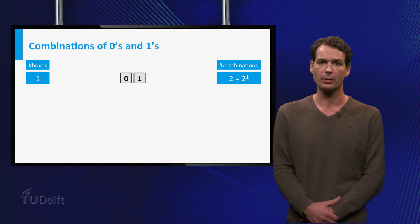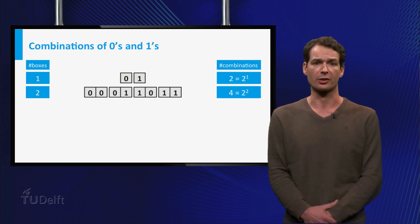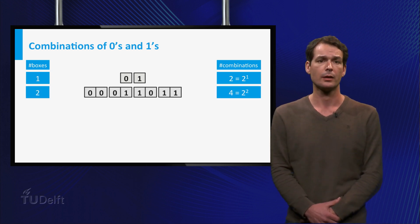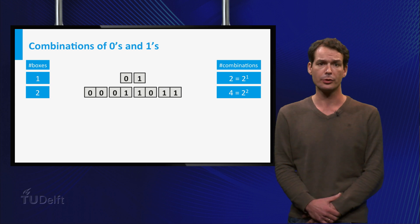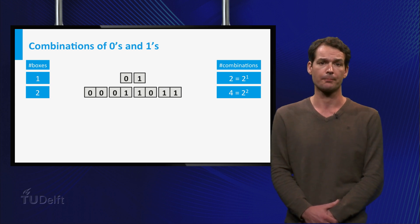For example, there are four possible combinations when we use two boxes. The more boxes you use, the more combinations you can make.